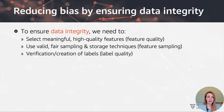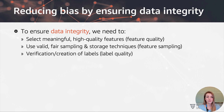On a high level, how can we reduce bias? We can mitigate bias by ensuring data integrity — that means selecting meaningful, high-quality features, using valid and fair sampling and storage techniques, and double-checking the labels and the annotation creation process. A lot of the bias we find is actually historical or comes from sources where bias is already inherent, so if we just use that data in a supervised setting, the model will likely amplify the bias that already exists in the data itself.